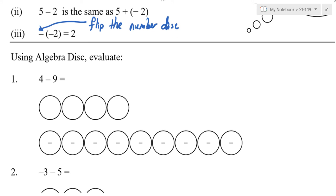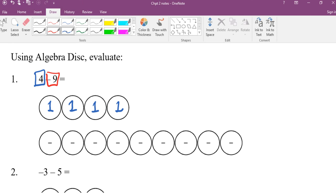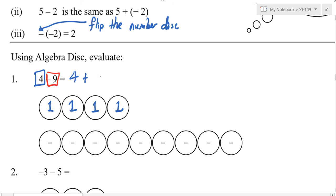What happens when I have 4 minus 9? Let's use number discs to help. The first 4 is 1, 1, 1, 1. Agree? Now what does minus 9 mean? This minus 9 actually means I have 4 plus negative 9.